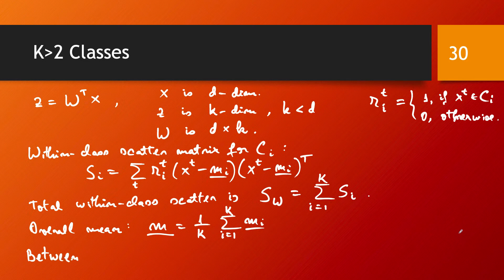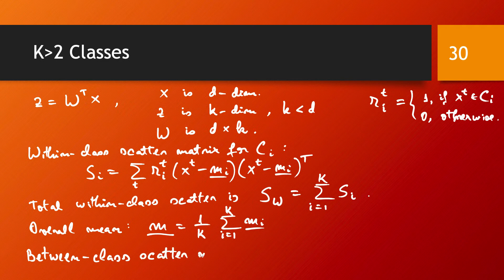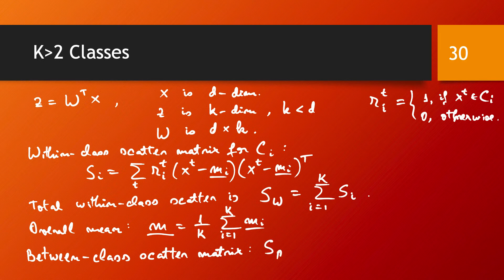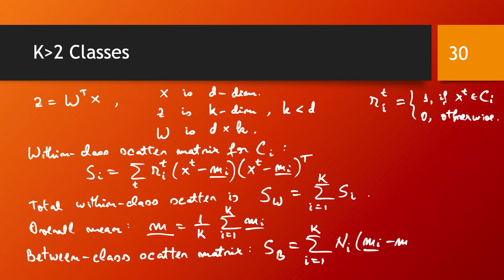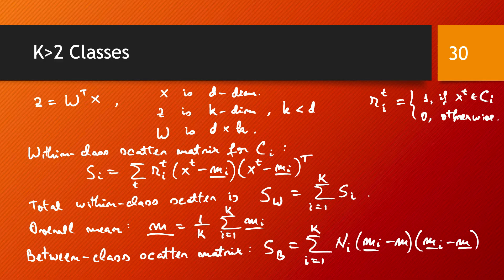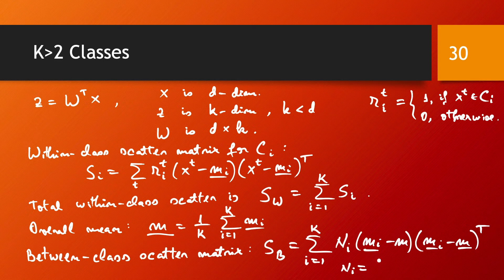And the between class scatter matrix, this is defined as S_B, so B from between. This is sum for all the classes, so i from 1 to K, we have N_i, and I comment in just a moment who N_i is.